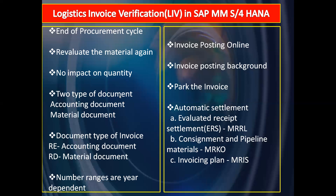The next point is document type. In invoice verification we have two types of documents: accounting document and material document. Similar to goods receipt, two types of documents are generated here as well. For invoice verification, the document type RE is used for accounting documents, and RD is used for the material document.